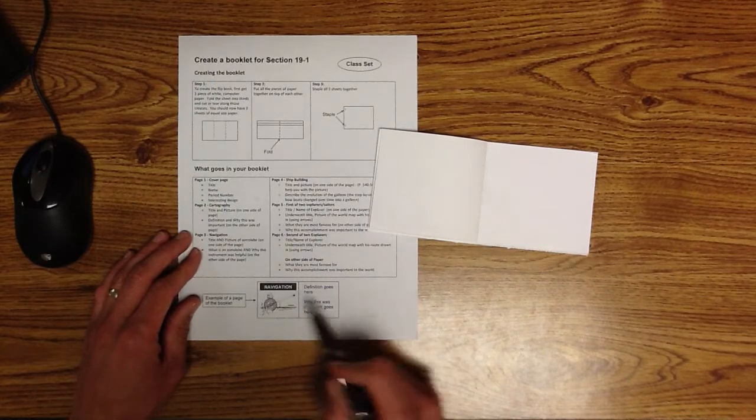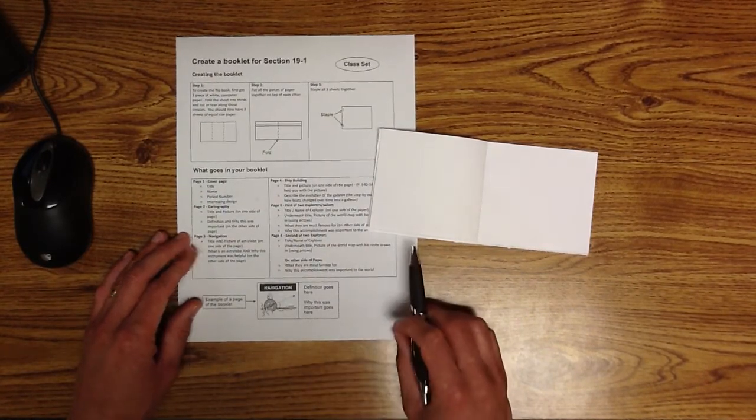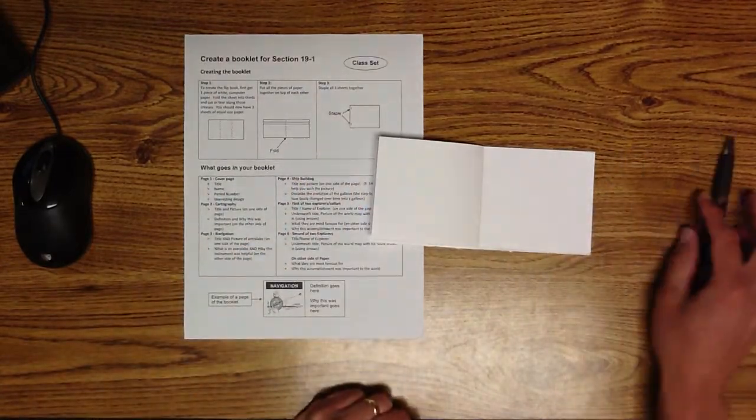The bottom here, it gives you an example. Here's the title, here's the picture, here's the writing over here, okay. So that's basically how to set up your exploration booklet.